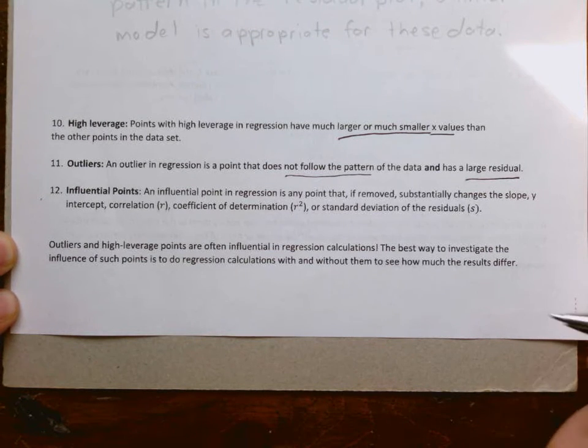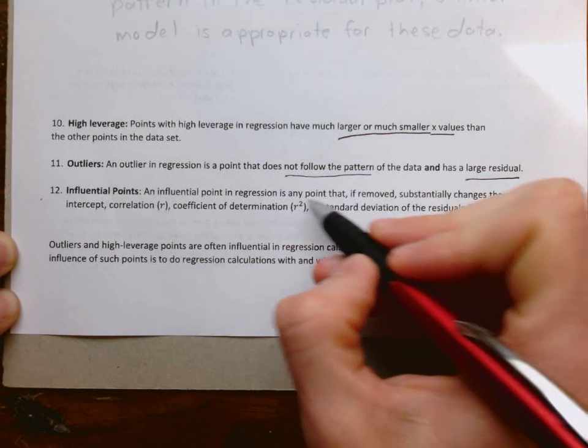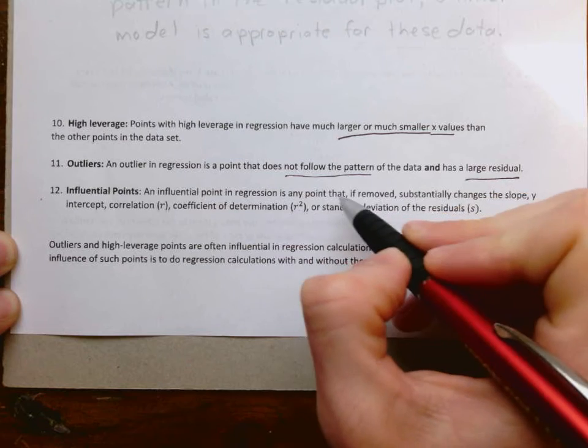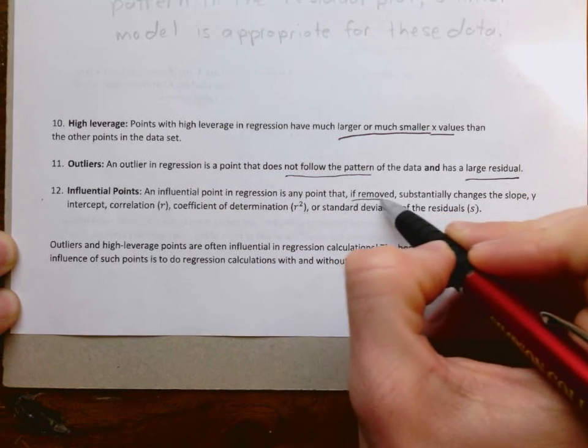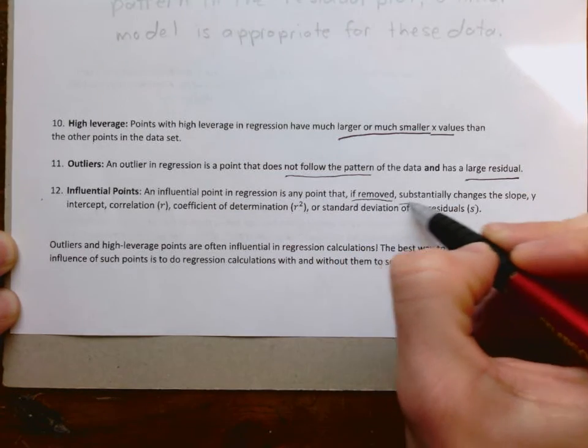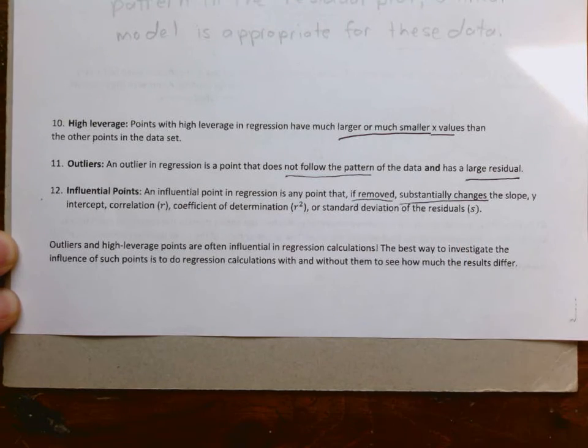For an influential point, there are a couple different conditions, but the main one is: if we remove it, does it make a substantial change? If removed, we're looking for a substantial change in the slope, y-intercept, correlation, coefficient of determination, or standard deviation of residuals.